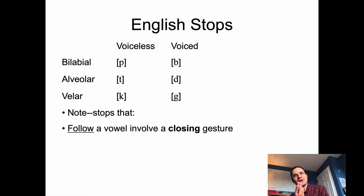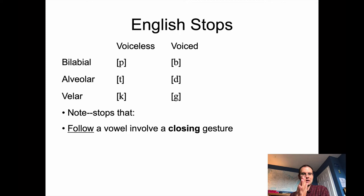If you create a stop after a vowel, like in 'op,' you have to close your vocal tract — bring two articulators together. But if you make a stop that precedes a vowel, like in 'pa,' the stop gesture involves opening up your vocal tract: it starts closed, and then you open it up. So it's kind of two opposite things — you just have to make that target somewhere in the middle to make a stop.